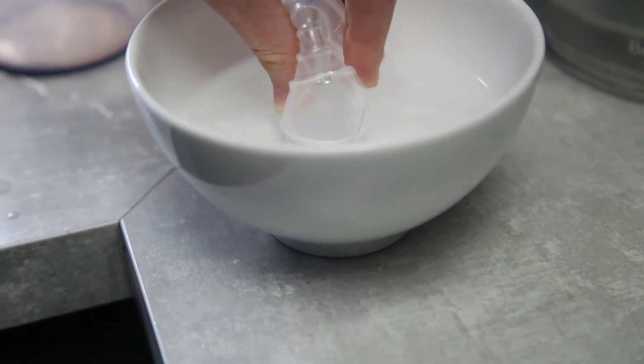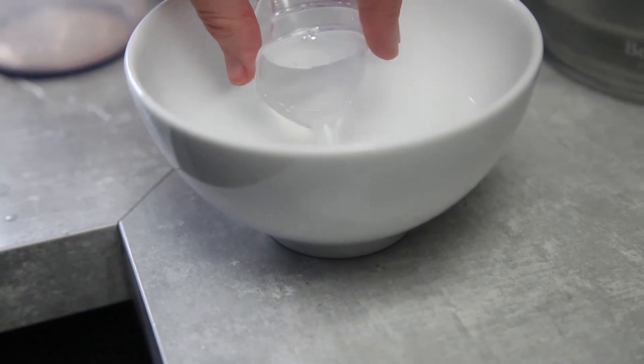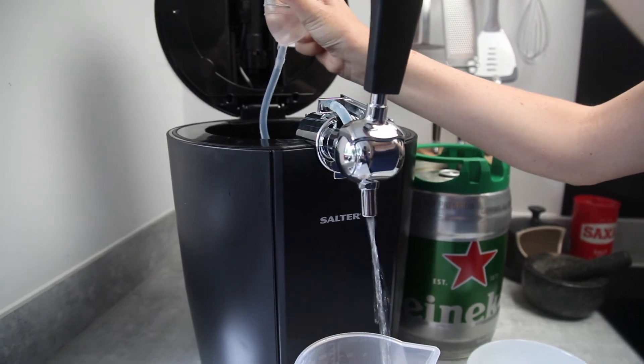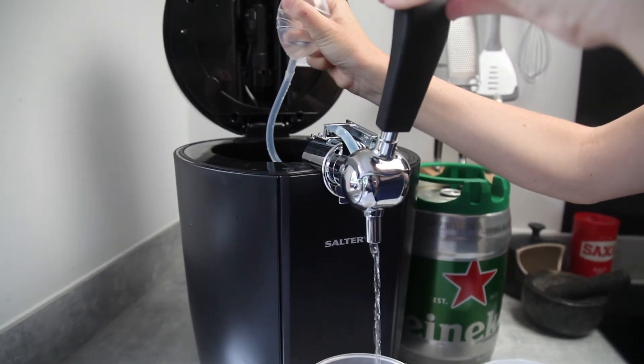To clean the tube, fill a jug of warm water and submerge the cleaning bottle. Pull down the beer tap handle and squeeze the bottle to push the water through the beer tap tube.